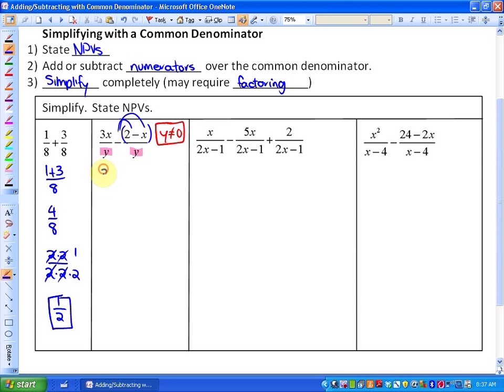Our simplest form would be 3x minus 2 minus x all over a common denominator of y. You have to take the opposite of both terms in your second numerator, so that's 3x minus 2 plus x, and that's critical. That plus x part is often missed.